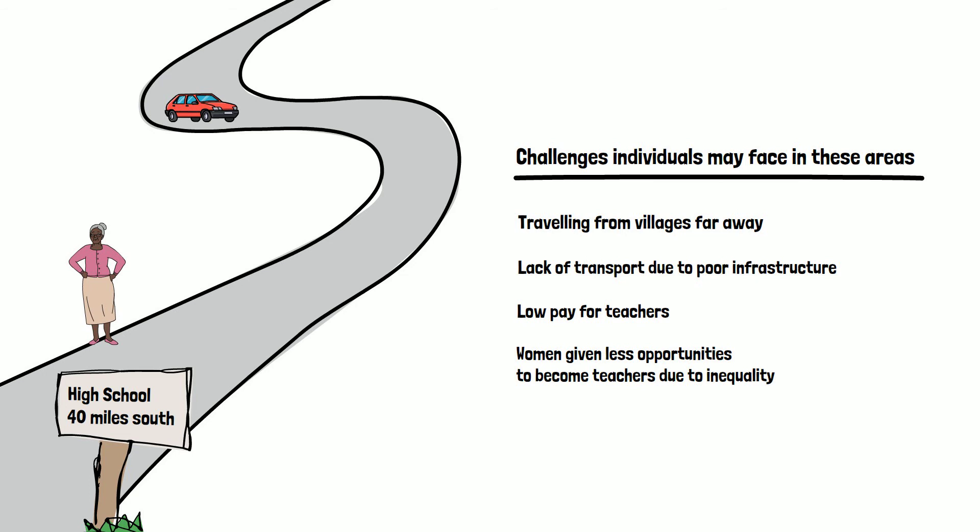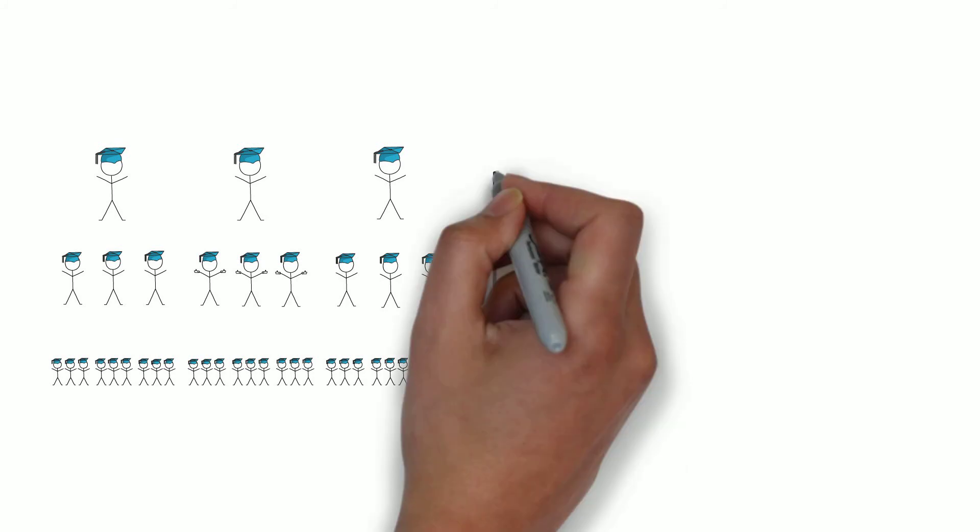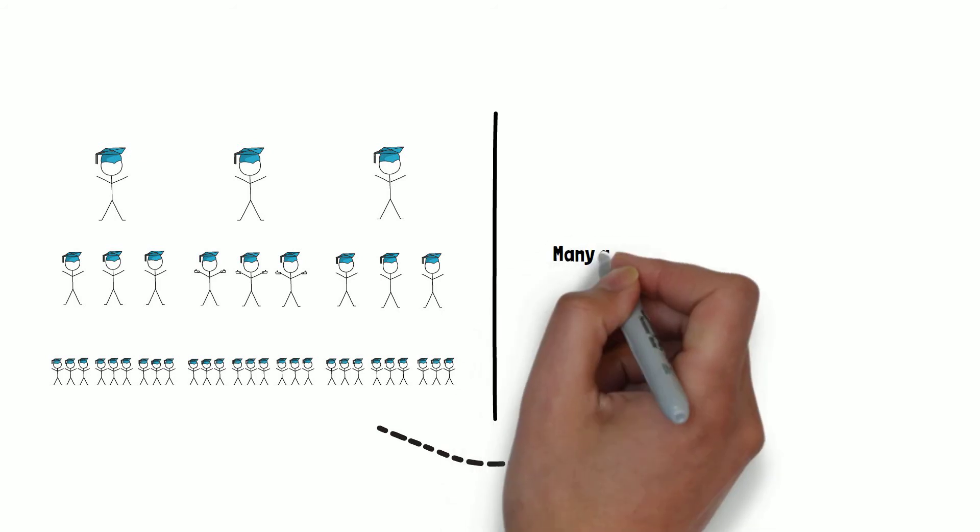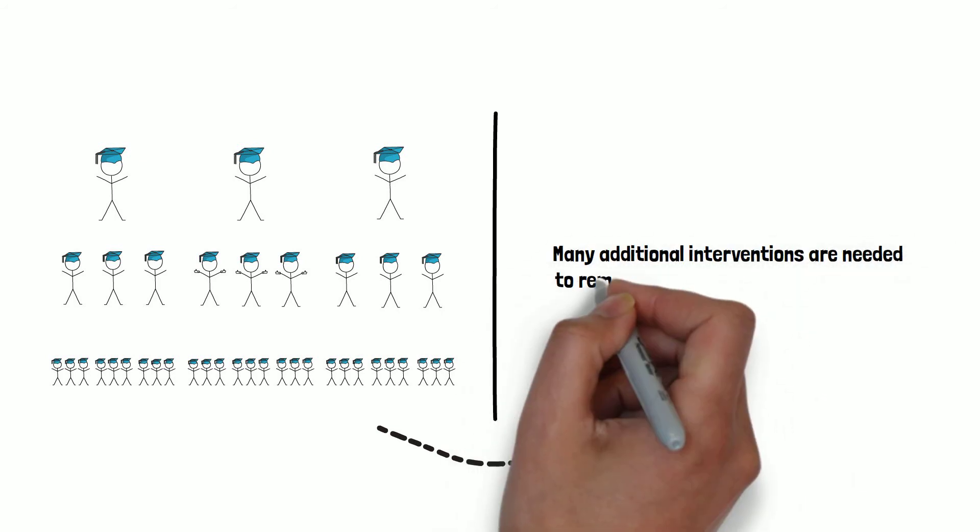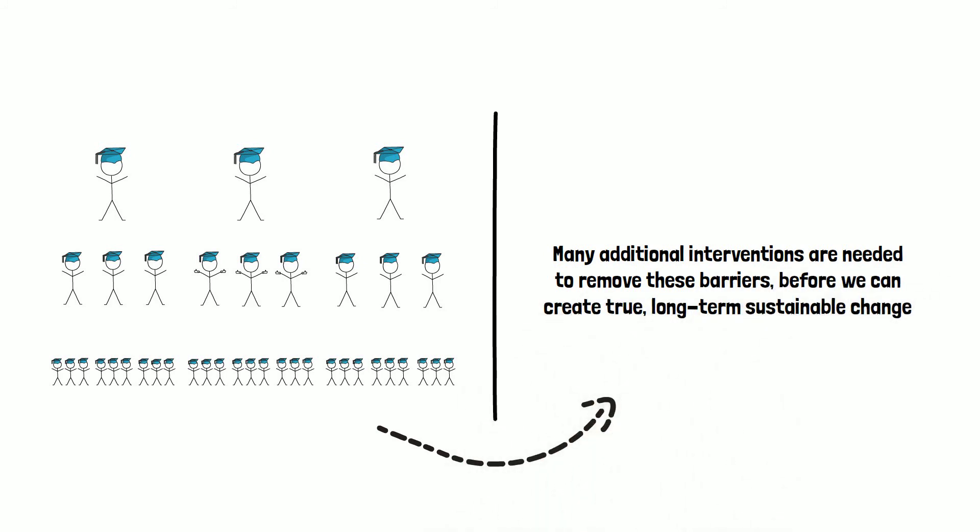Training local people to become teachers may seem like a sustainable solution to increase the supply of qualified teachers. But alongside this, many additional interventions are needed to remove these barriers before we can create true long-term sustainable change.